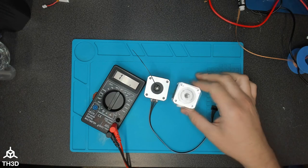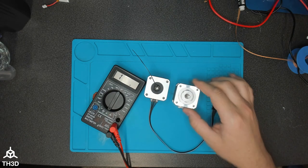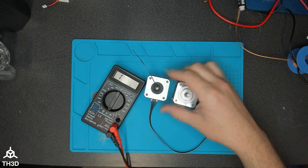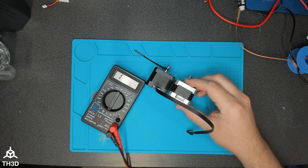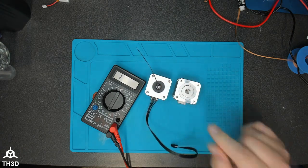So just for comparison, this is a Creality stepper motor. I'm going to show you that this one will read different than this because these are two completely different motors. You can see the one is actually bigger than the other. So these will usually have different coil resistances.